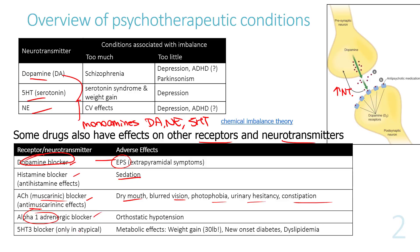Atypical antipsychotics also block 5-HT3 receptors, which has metabolic effects leading to significant weight gain — not just a couple of pounds, but around 30 pounds — leading to atherosclerosis, dyslipidemia, and obesity.